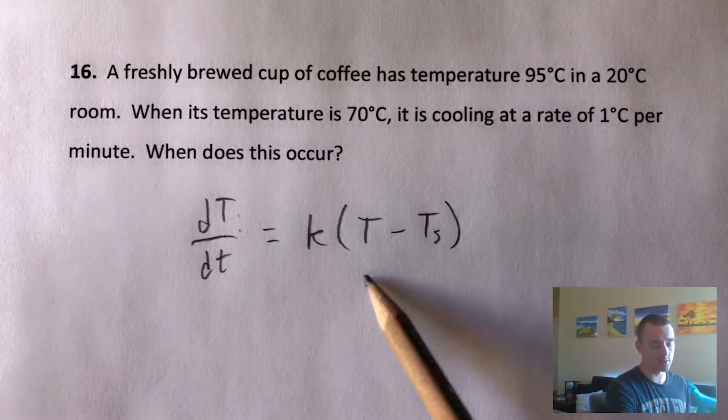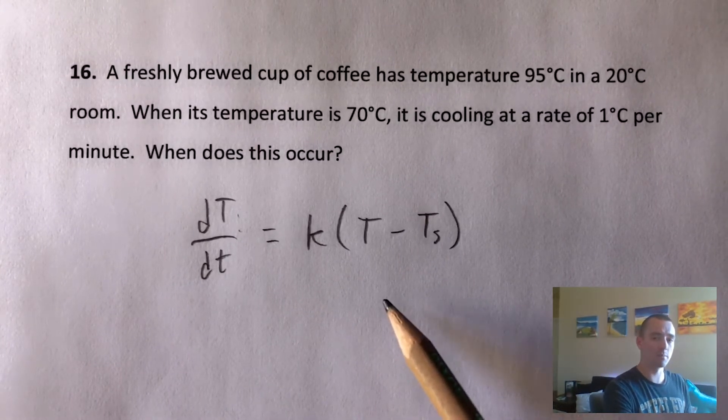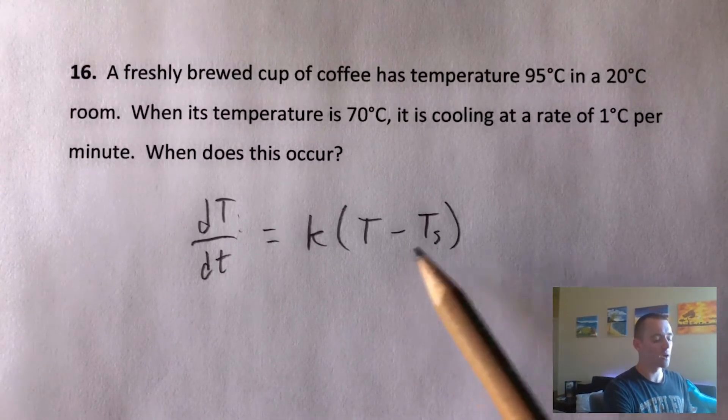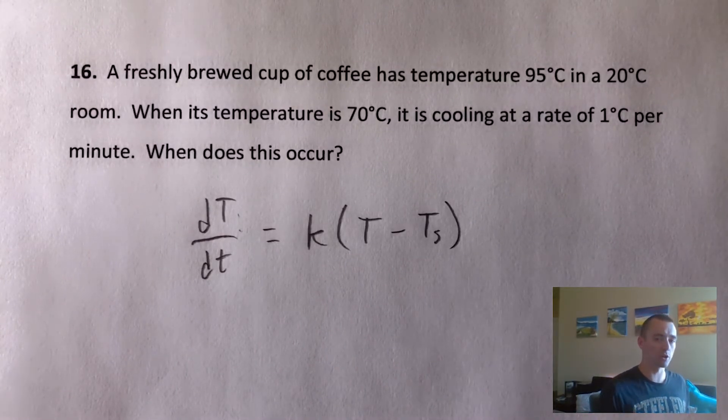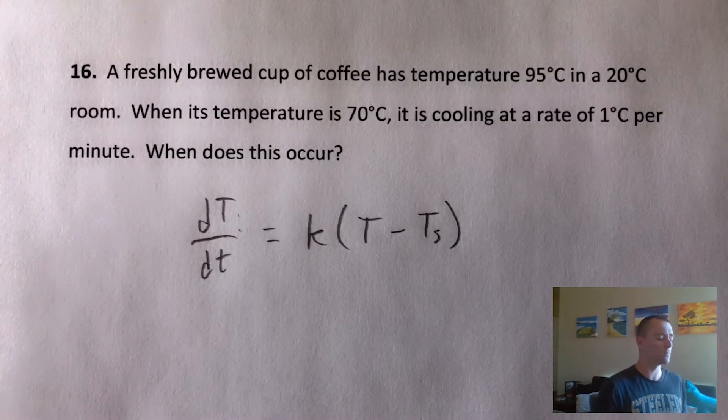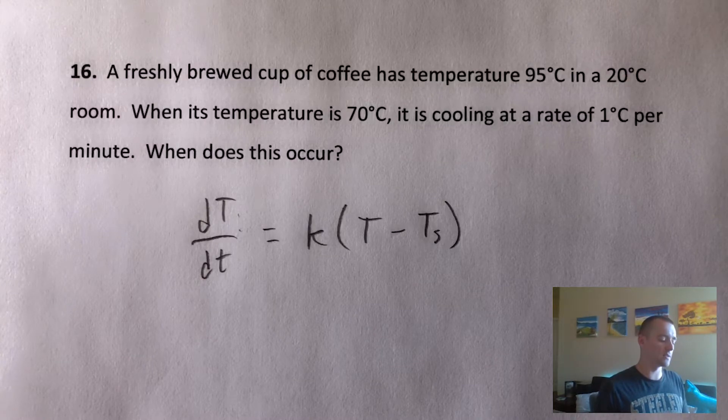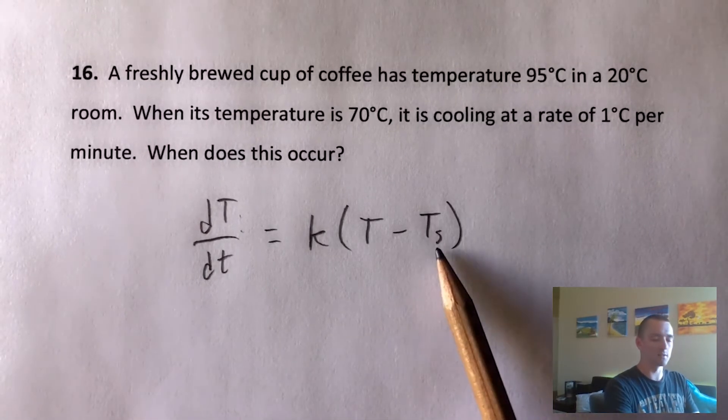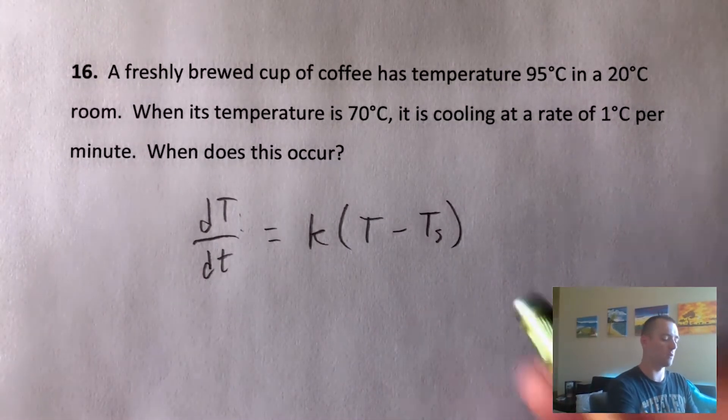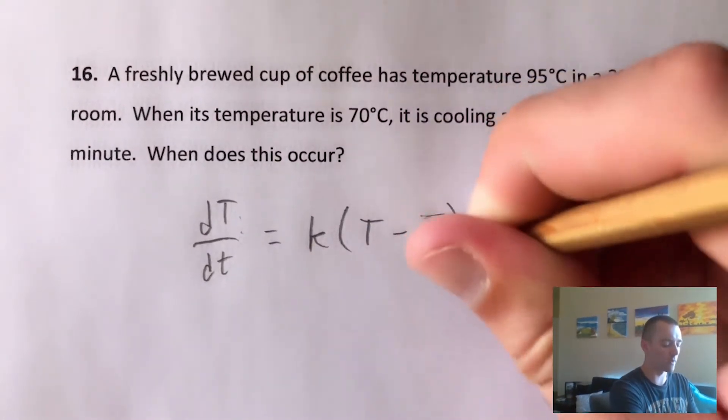Big T is temperature of the object, so in this case, the temperature of the cup of coffee. And then TS is the temperature of the surroundings. We know that this cup of coffee is sitting in a 20 degree room, so TS is 20. We can just put that in right off the bat. That's pretty straightforward.